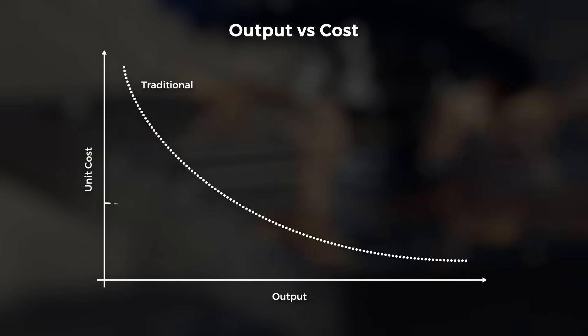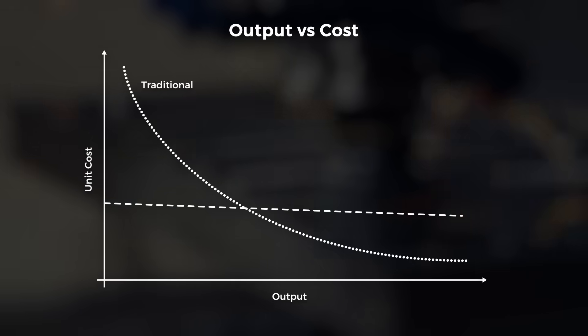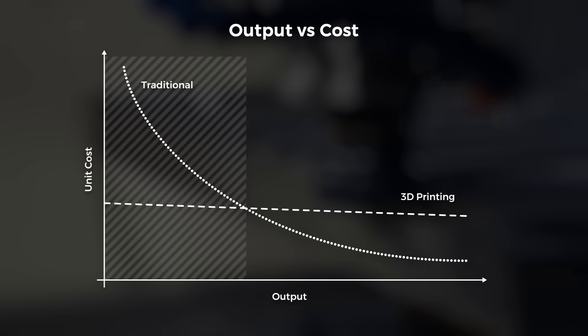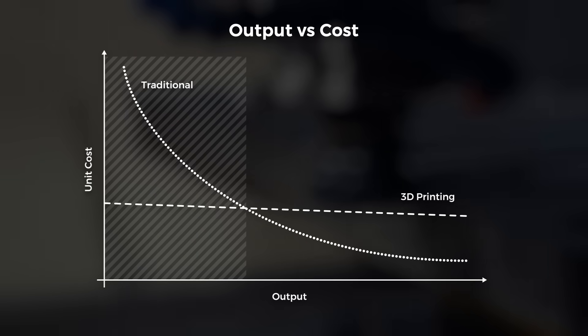This means that it only makes economic sense to use 3D printing for parts that fall behind this break even point, which is why it is used so frequently in rapid prototyping.